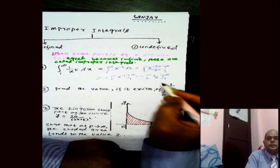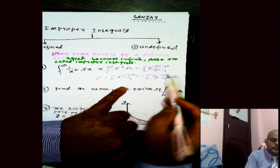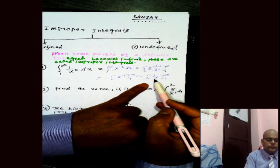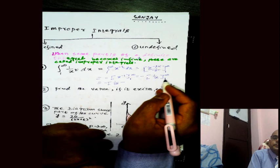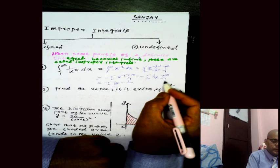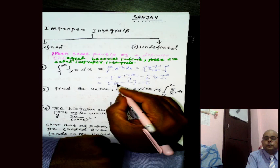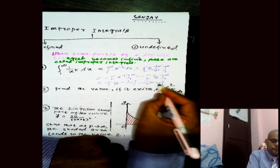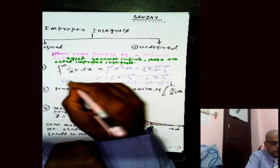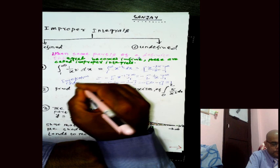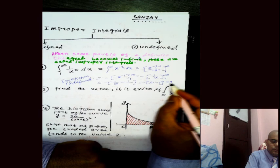Substituting the limits, we get minus 1/infinity minus minus 1/1. Since 1/infinity equals 0 and 1/1 equals 1, this gives us 0 minus (minus 1), which equals 1. So this integration is defined because we have a specific finite answer of 1.